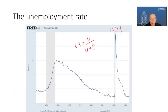Here's the U3 unemployment rate. This is the unemployment rate that gets the most attention every month. It's released on the first Friday of the following month, and it's defined as the number of people unemployed. To be counted as unemployed, you have to first not have a job, but you also have had to look at least once in the last four weeks for work. That's divided by the number of people who are unemployed plus the number of people who are employed — the civilian labor force — giving you the unemployment rate.